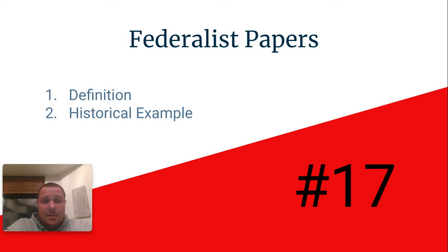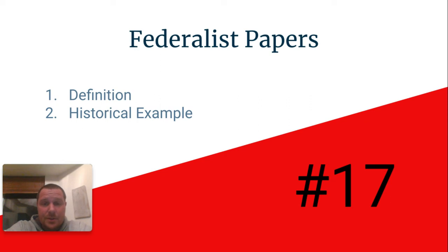Obviously, there were some states and individuals that supported the new Constitution and some that were opposed. Those who supported the new Constitution referred to themselves as Federalists, and they referred to those who opposed the new Constitution as Anti-Federalists.